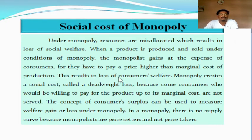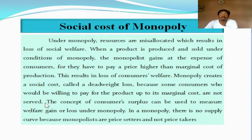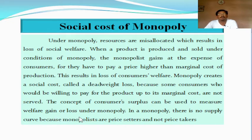Thus, monopoly creates a social cost. Whatever loss occurs is called the social cost, or it is also called the deadweight loss — because the buyers or consumers who are ready to pay the price which is equal to marginal cost are not served. The section of society deprived from consumption of those commodities minimises social welfare at that volume. That may be measured with the help of consumer surplus — the concept developed by Professor Alfred Marshall to measure gain or loss in the theory of consumer behaviour. It is also applicable to measure the welfare gain and loss under monopoly market, as shown with the help of a diagram.